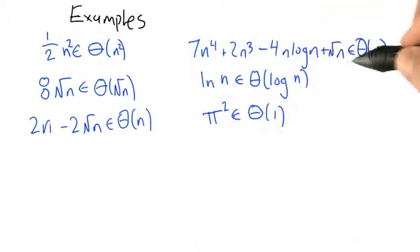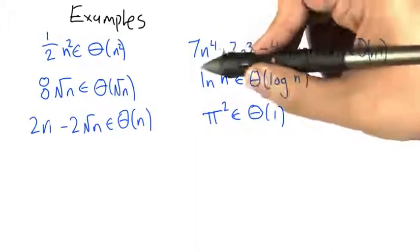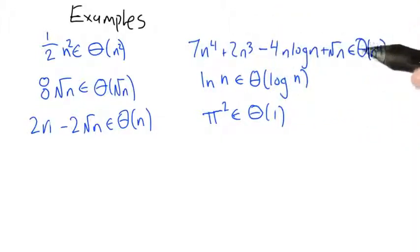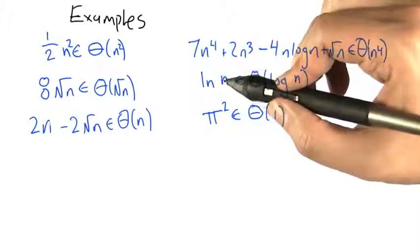A complicated expression like this, where we have n^4, which is the term that grows the fastest, becomes big theta of n^4.